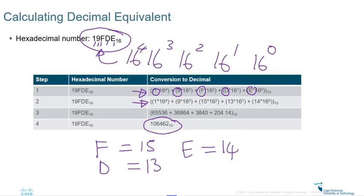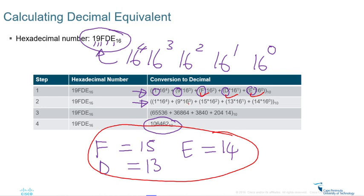You replace F with 15, D with 13, and E with 14, then perform the calculation: 1 times 16 to the power of 4 gives the first value; 9 times 16 to the power of 3 gives the next; 15 times 16 to the power of 2 gives another; 13 times 16 to the power of 1 gives another; and 14 times 16 to the power of 0 gives the final term.